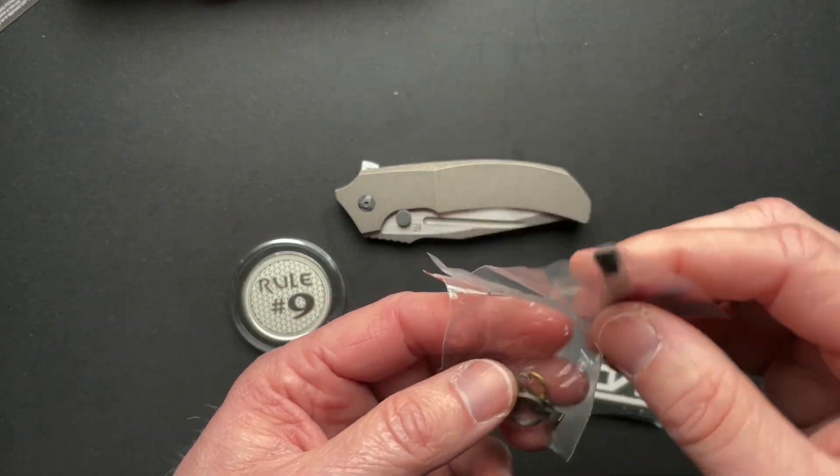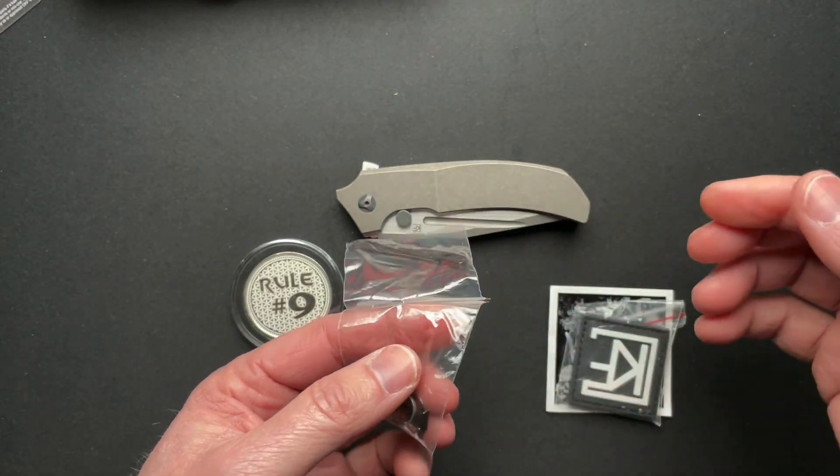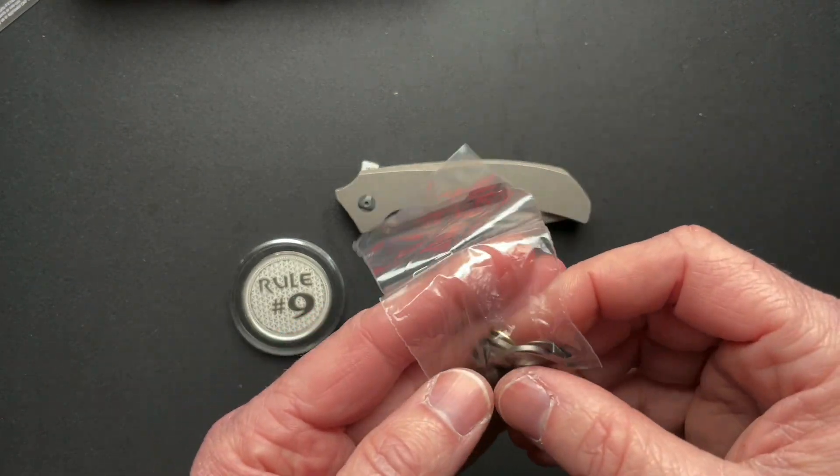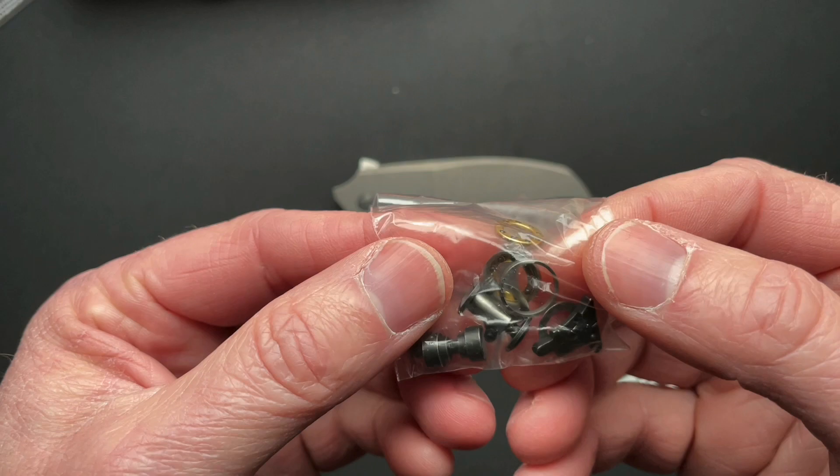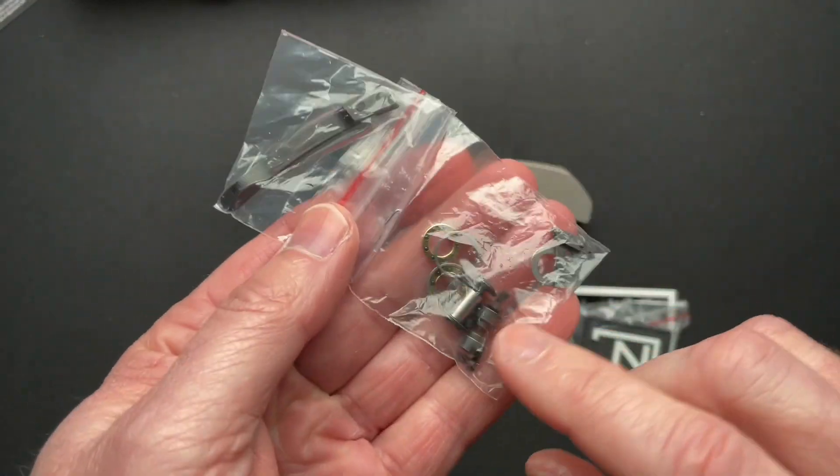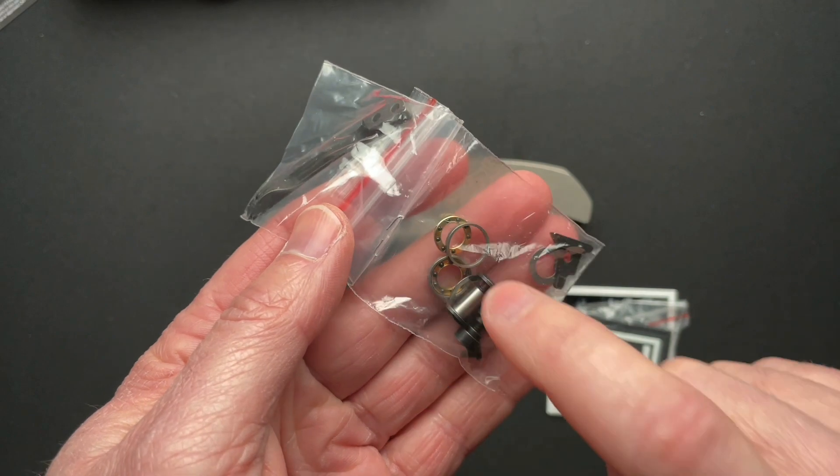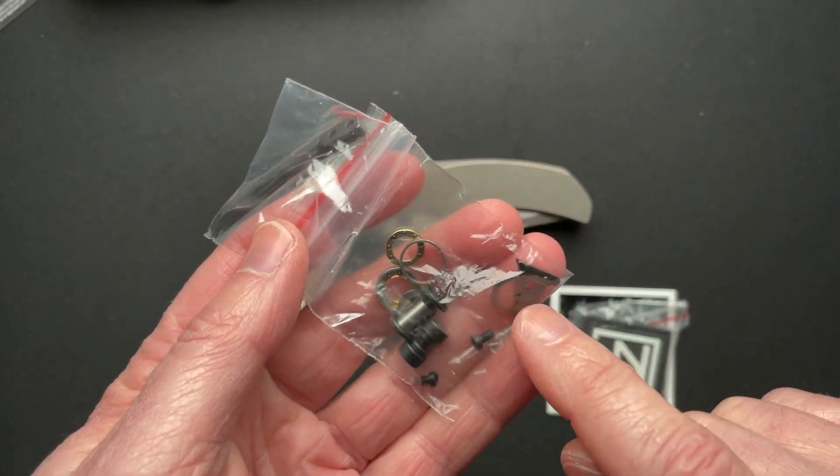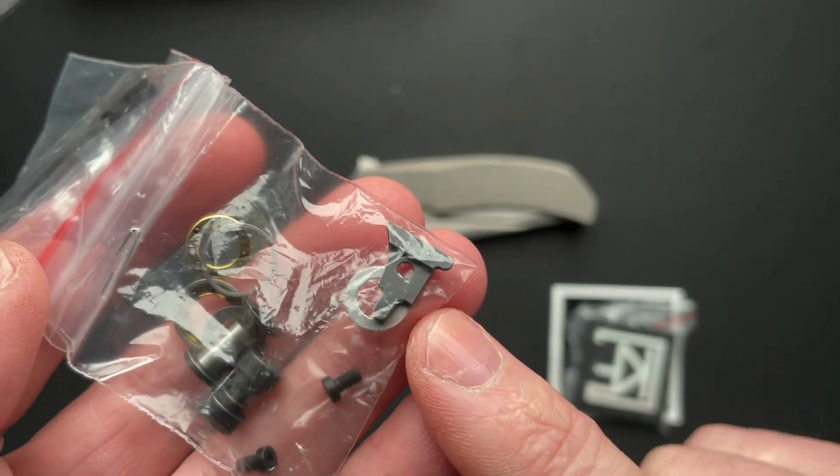This comes with an extra clip. Sometimes they come with extra clips, sometimes not. But they do generally come with all new replacement hardware. Not only do you have new bearings in here, but you have new pivots. Sometimes you even have a new lock bar insert.